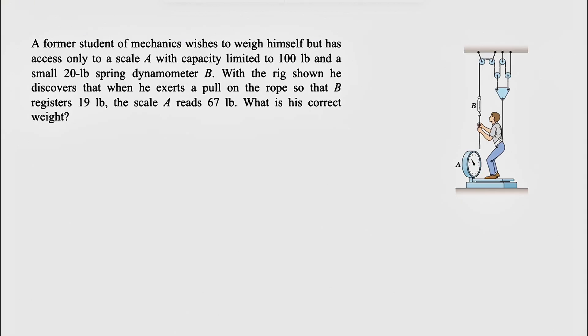that when he exerts a pull on the rope, B registers 19 lb and scale A reads 67 lb.